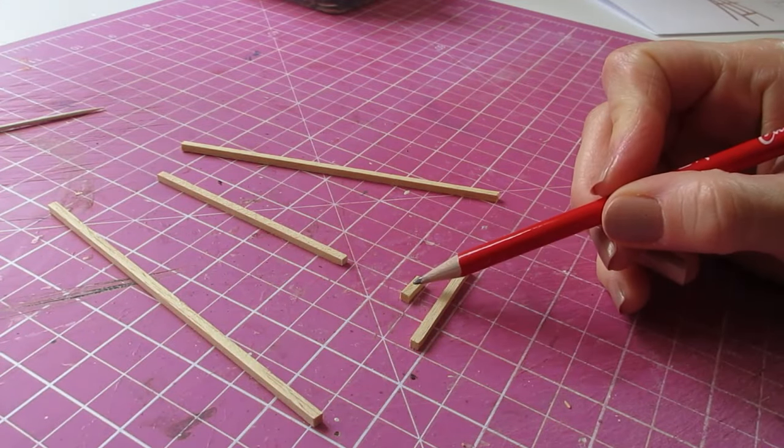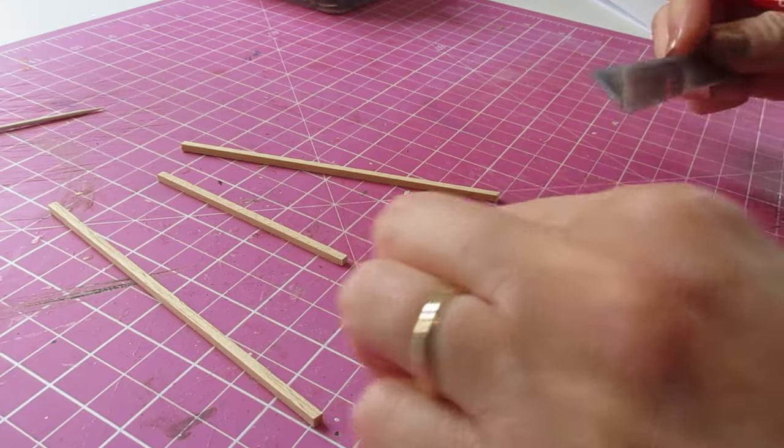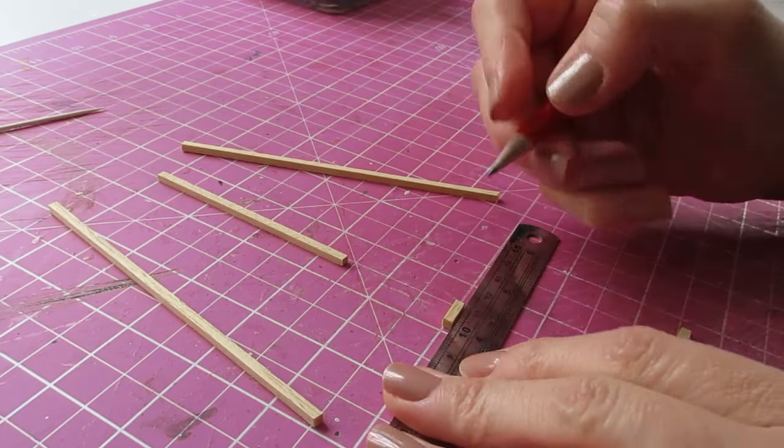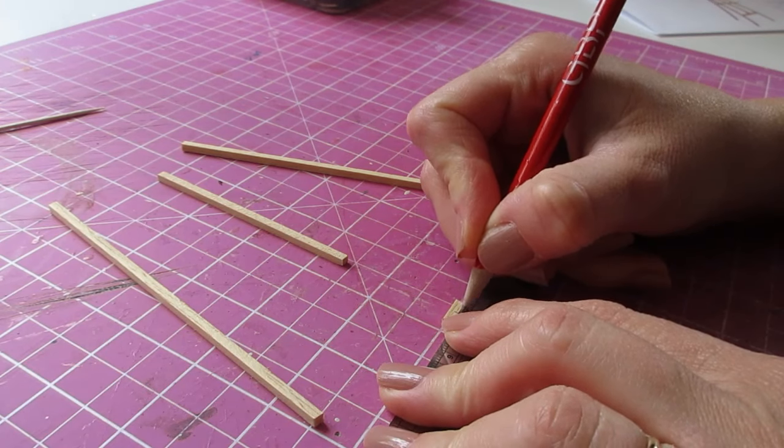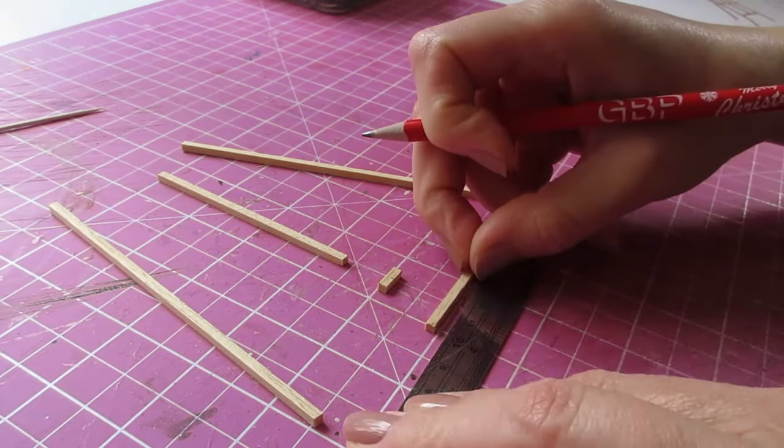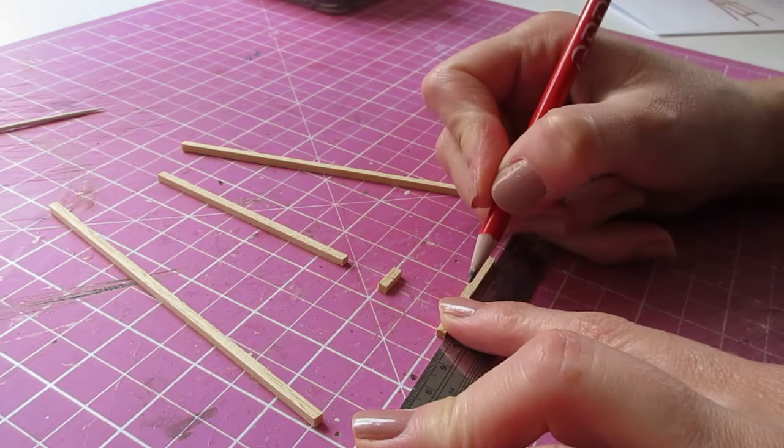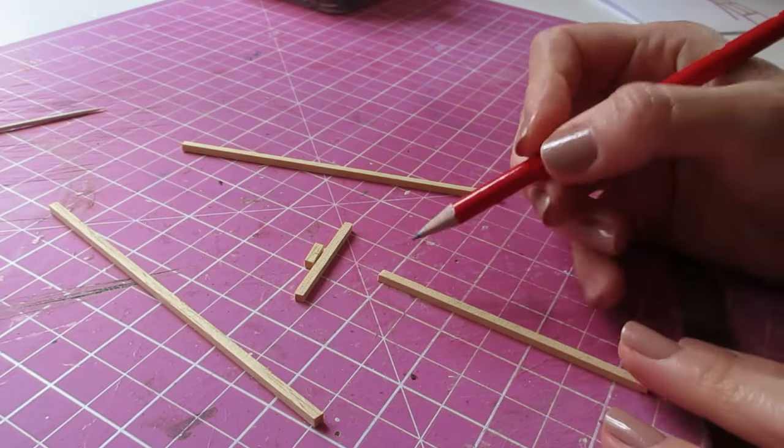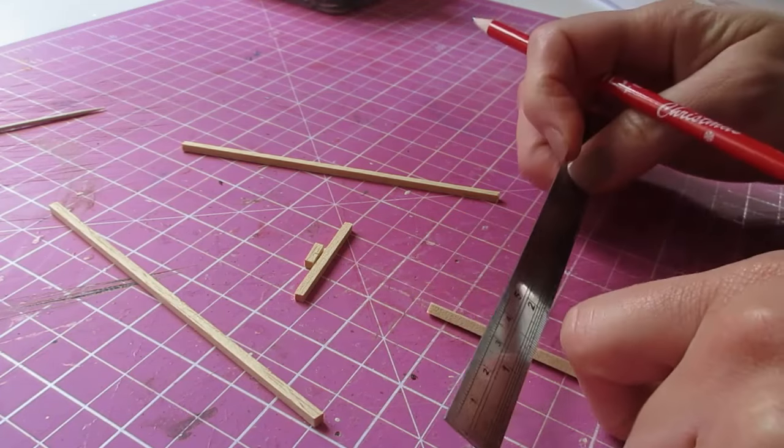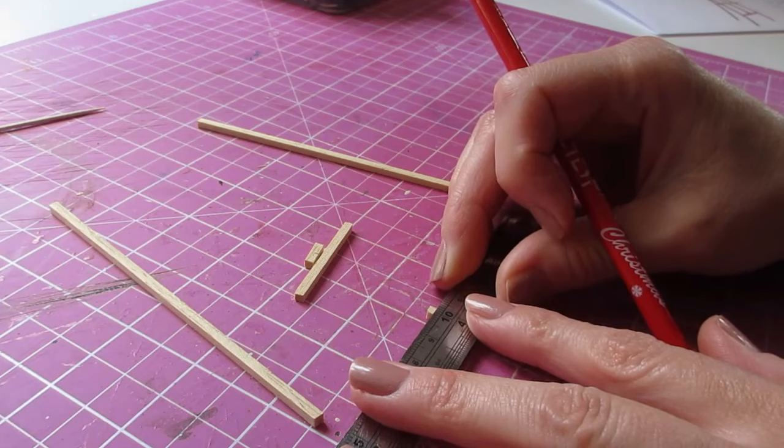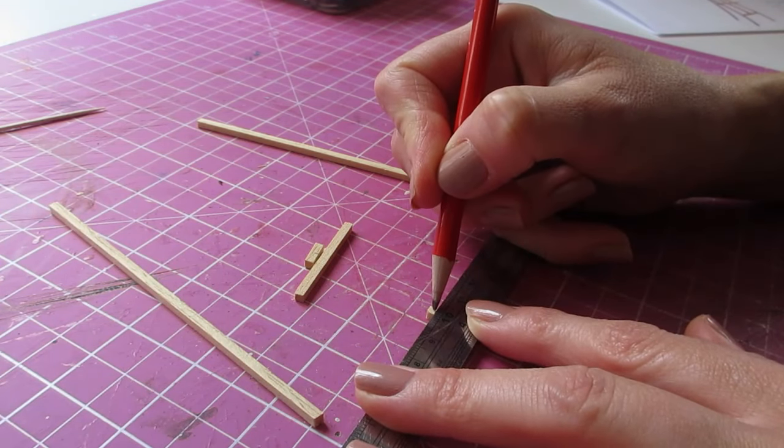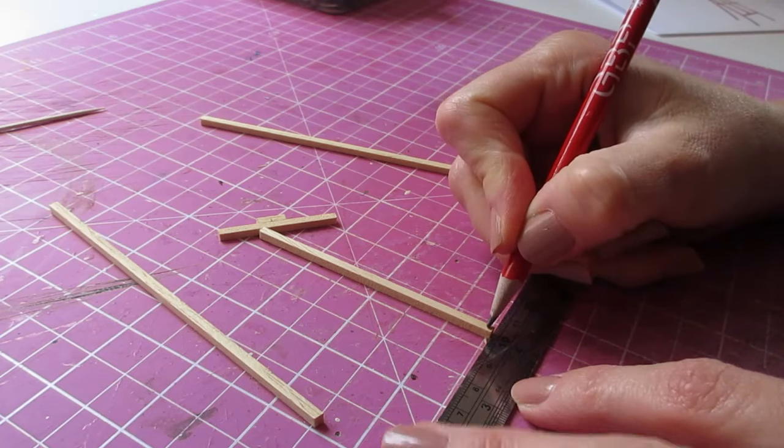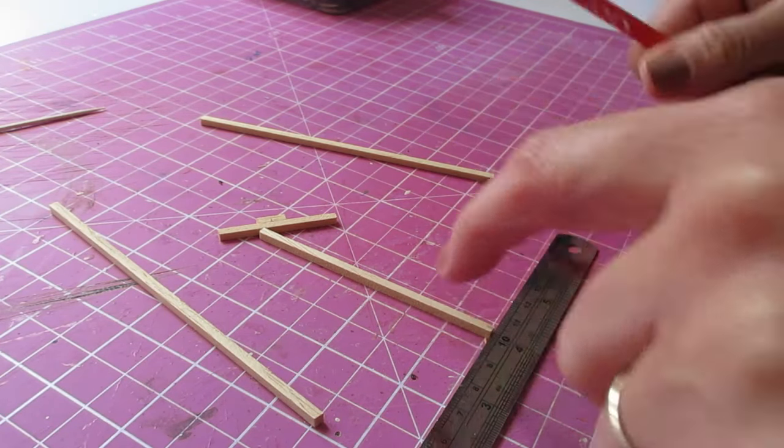We're going to begin by making pencil marks in the center of the top and bottom support. Just using your smaller ruler, make a little pencil mark in the center of that one and that one as well. Then bring in the central support and make a pencil mark in the center widthways, just at the top and bottom of that piece as well.